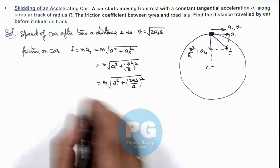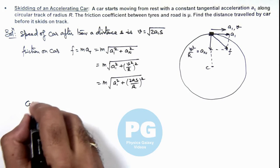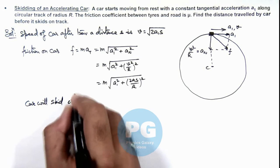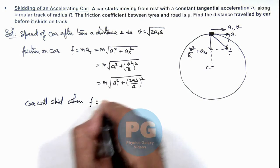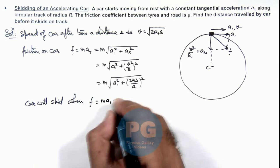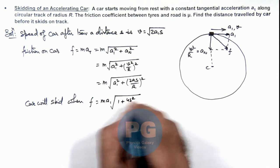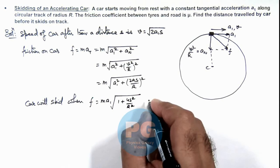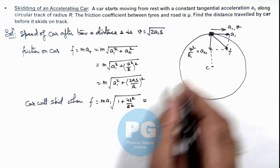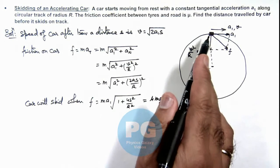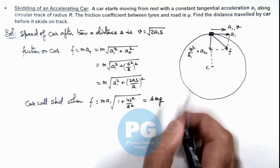So here we can write, car will skid when the value of this friction, which is m a_t √(1 + 4s²/R²), will be equal to the limiting friction which is μmg, as the normal reaction acting on car by ground is mg only.